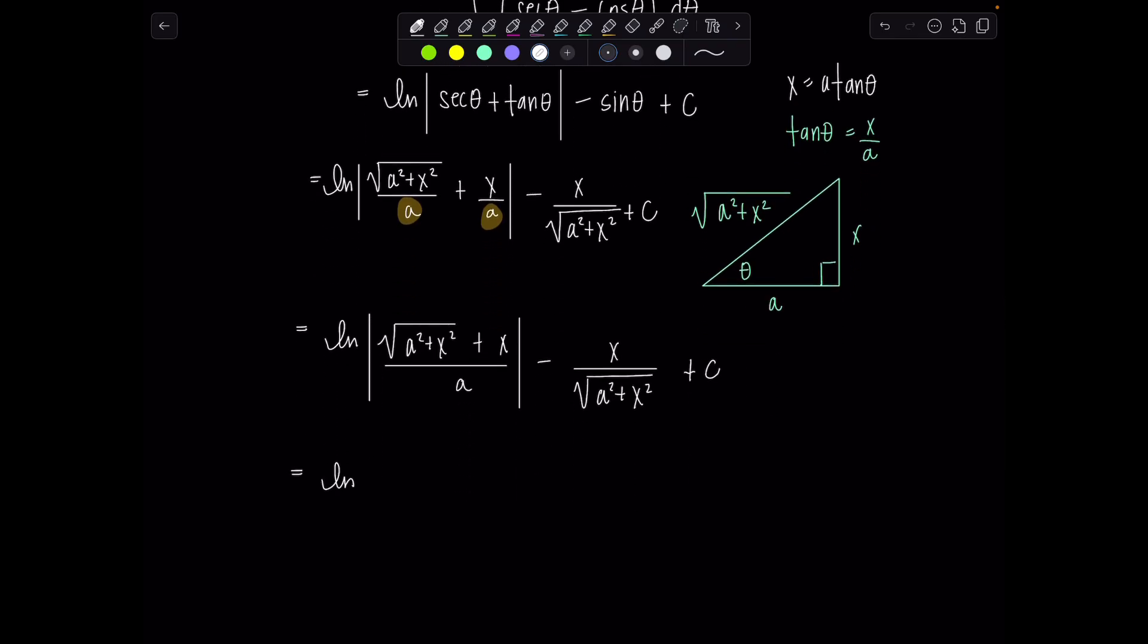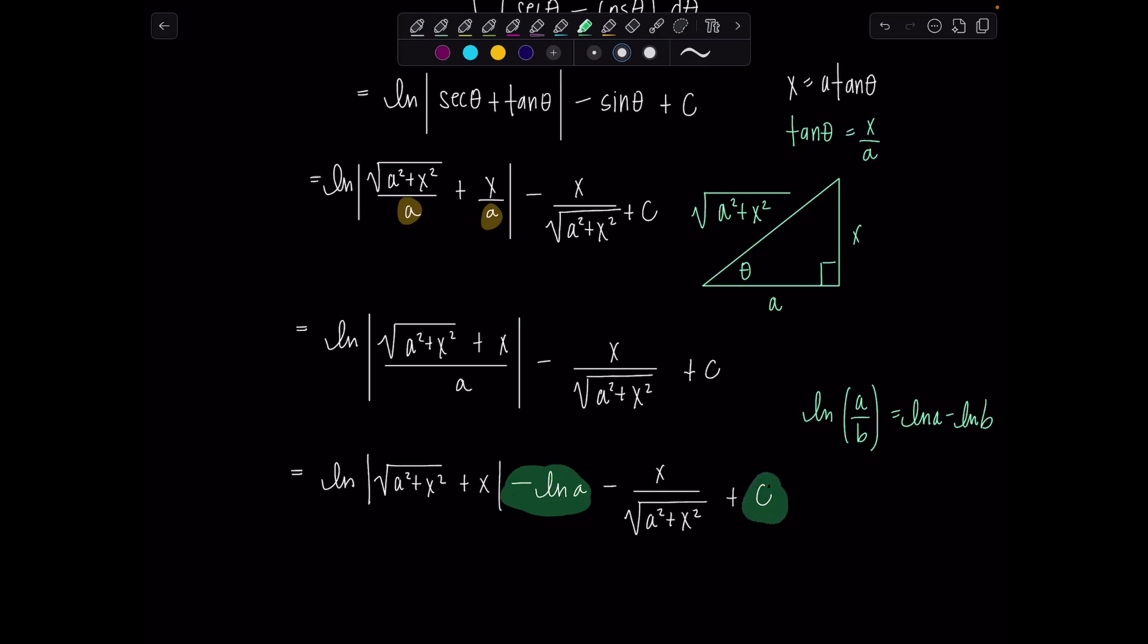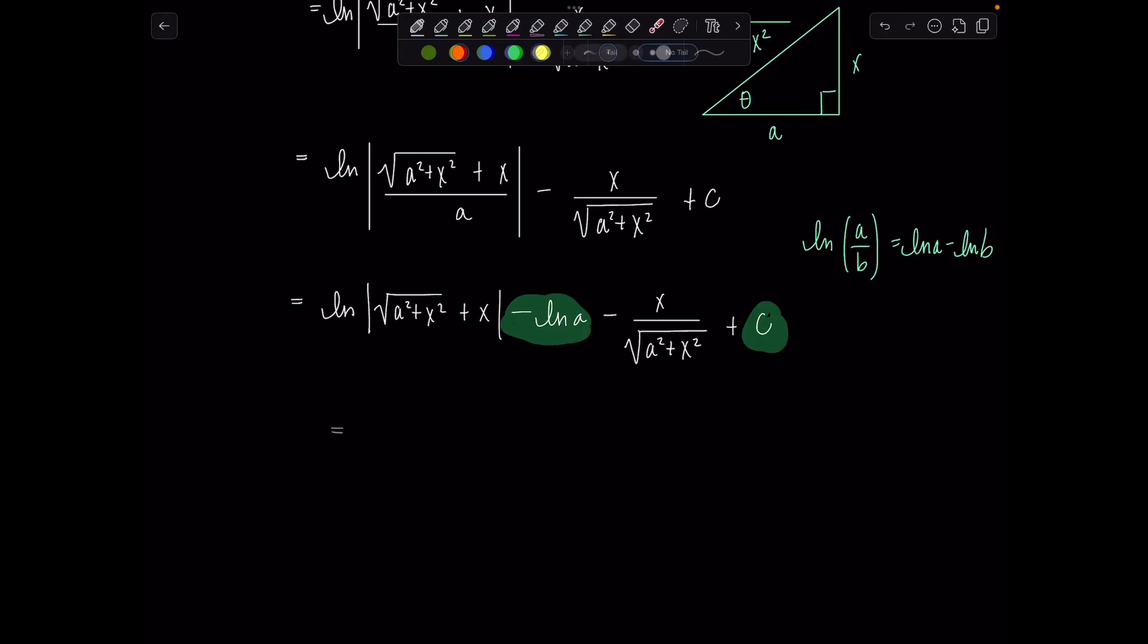You come in with your log properties and you go, ooh, I can rewrite this as ln absolute value rad a squared plus x squared plus x minus ln of a. Yes. Because we know ln of a divided by b is ln of a minus ln of b. And then we have minus x over rad a squared plus x squared plus c. And then what was the whole point of doing that? Well, this negative ln of a is just a constant which can be absorbed in our plus c constant. And we don't have to rewrite two terms.